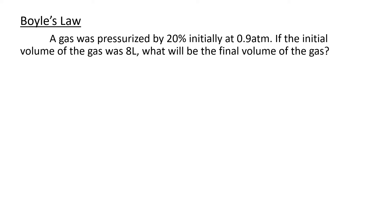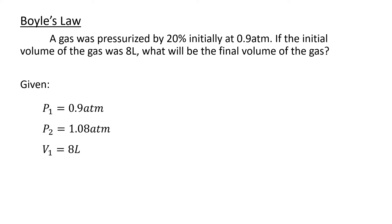Another problem under Boyle's Law: a gas was pressurized by 20%, initially at 0.9 atm. If the initial volume of the gas was 8L, what will be the final volume? The pressure was increased by 20%, so we multiply 0.9 atm by 1.2 to get a final pressure of 1.08 atm. Since pressure increased, under Boyle's Law, volume should decrease — so V2 should be less than 8L.